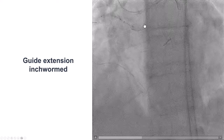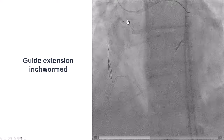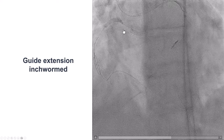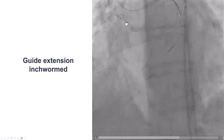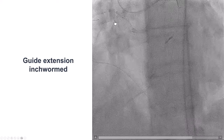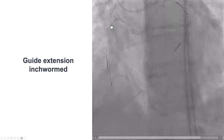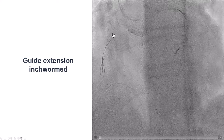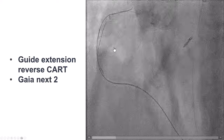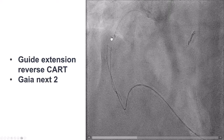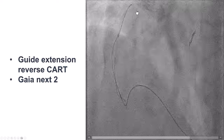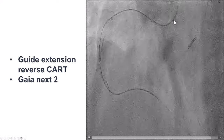We advanced the guide extension further using the inch-worm technique — balloon inflated, deflated, then the guide extension advanced — which was very useful for achieving the reverse CART technique. We advanced to the mid-RCA and were able to advance a retrograde wire after multiple attempts. This was a Gaia Next 2 inside the antegrade guide extension. We then externalized an R350 wire.